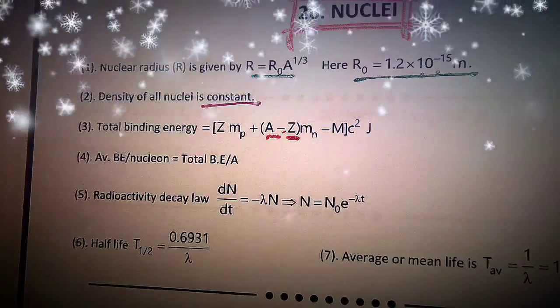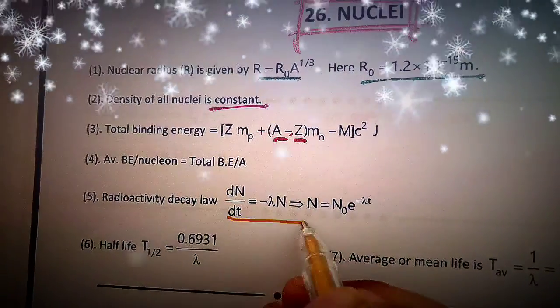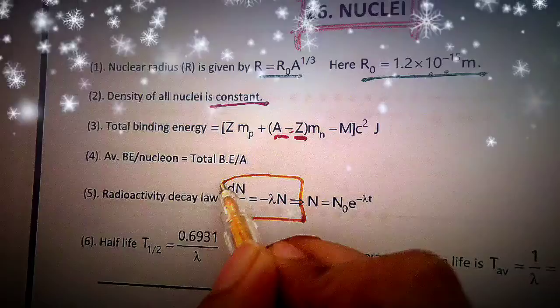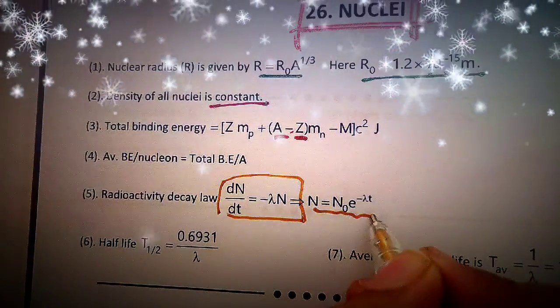Then, radioactivity decay law: dN by dt equal to minus lambda N, or N equal to N naught e to the power minus lambda t.